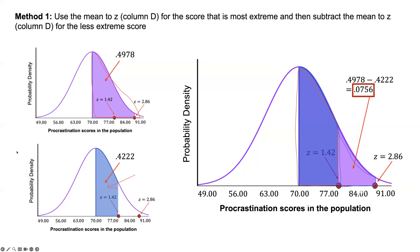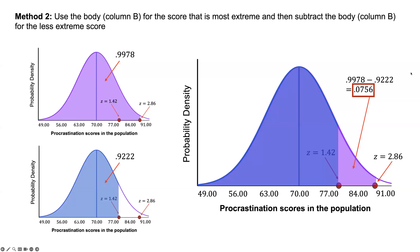The other method, this is the way I do it. I think it's easy for me, but it might work better for you to use the body column. It works the exact same way. The idea is you're looking for the body, and then you're subtracting the smaller portion of the body from that. You get the exact same answer of 7.56%.